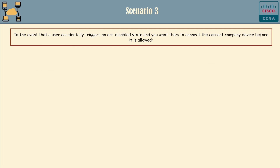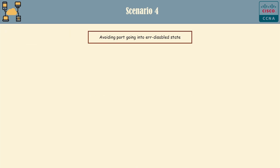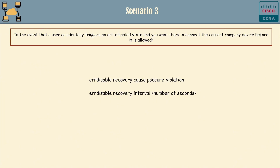Regarding Case 3, in the event that a user accidentally triggers an err-disabled state and you want them to connect the correct company device before it's allowed, here are the commands. Configure the recovery behavior for the port security violation error condition. The switch will automatically recover from a port security violation after 30 seconds. This allows the port to automatically recover from the err-disabled state after 30 seconds, giving the user the opportunity to correct the issue by connecting the correct company device.